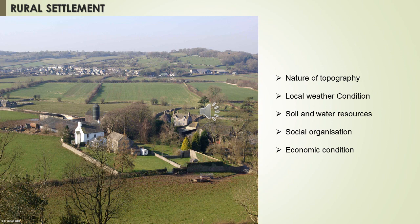The factors influencing rural settlement are: nature of topography — topography means the physical appearance of an area; local weather condition; soil and water resources; social organization; and economic condition. These are the factors that decide rural settlement.